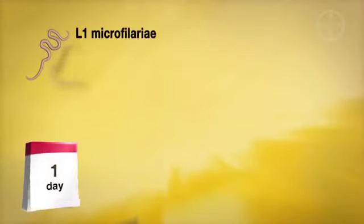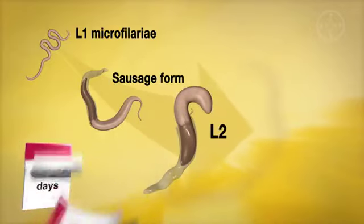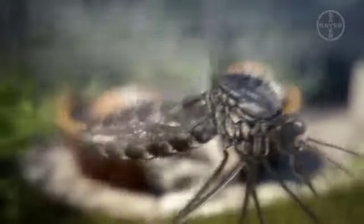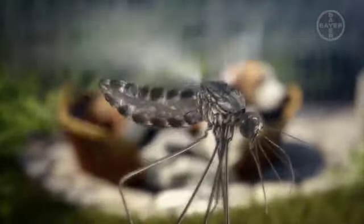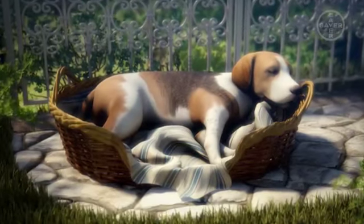Inside the insect, over a period of about 14 days, the L1 larvae develop into the infective L3 stage by molting twice. This mosquito is now a new vector of heartworm infection, threatening the lives of dogs and cats in endemic areas.